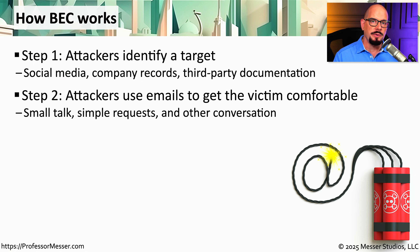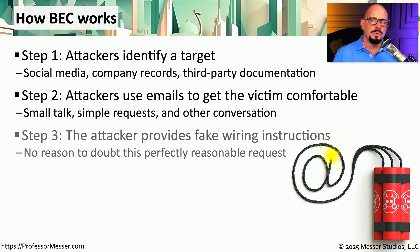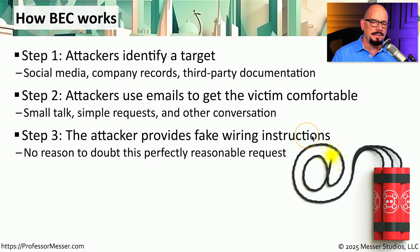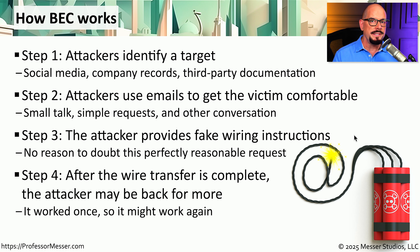These emails might contain detailed information about projects that are going on, or it may be simply small talk occurring between two people in two different organizations. Once the victim is comfortable, the attacker then executes the process that will gather data, money, or whatever the attacker is looking for. For example, the attacker could provide that fake bank information and then simply sit back and wait for those funds to arrive in the attacker's account. And if it worked one time, it could possibly work again, so the attackers could visit that victim again in the hopes that they have not yet discovered that this is actually a business email compromise.